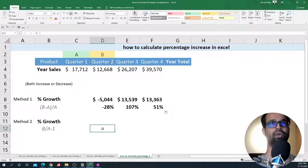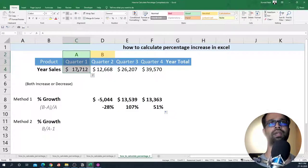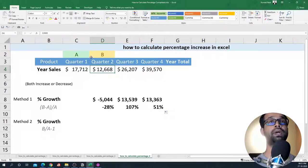In the second method, what we do is we take the first number, that quarter two number or the B number, and divide it by the A number and subtract one from it. Basically, what we are saying is we are taking quarter two as a percentage of quarter one.